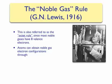There are two ways in which atoms can obtain noble gas electron configurations: electron transfer and electron sharing. In this lecture, we will focus on electron transfer.